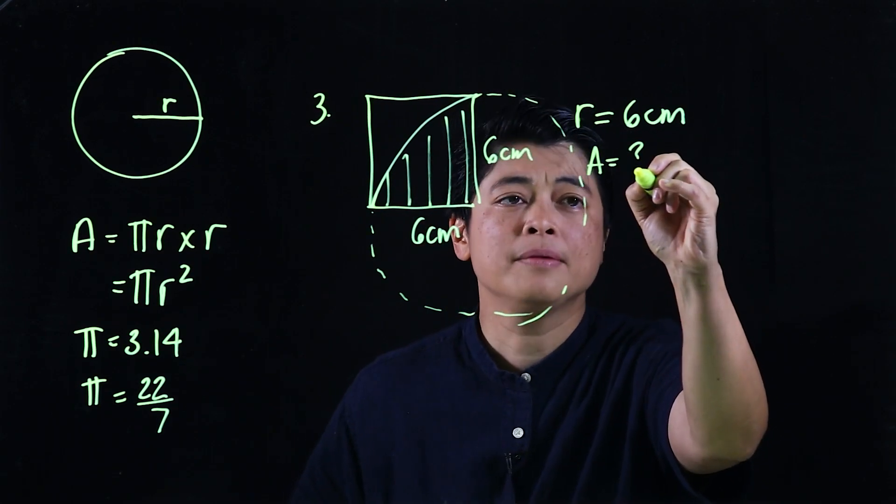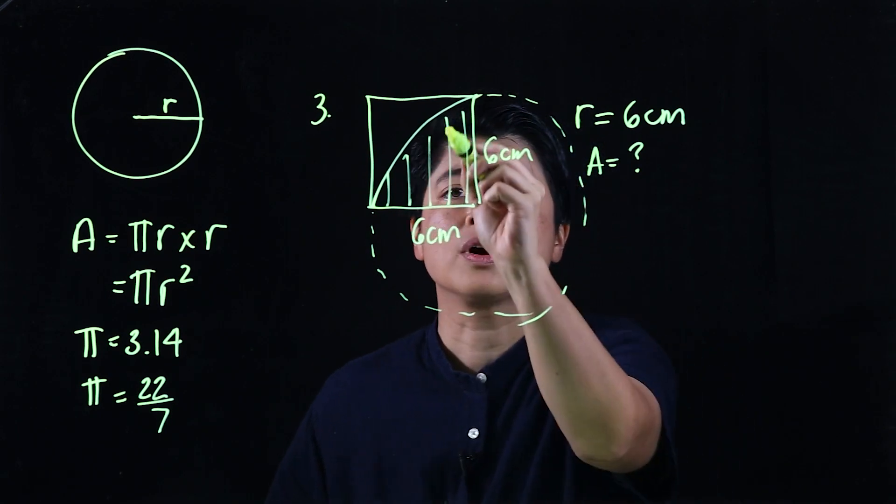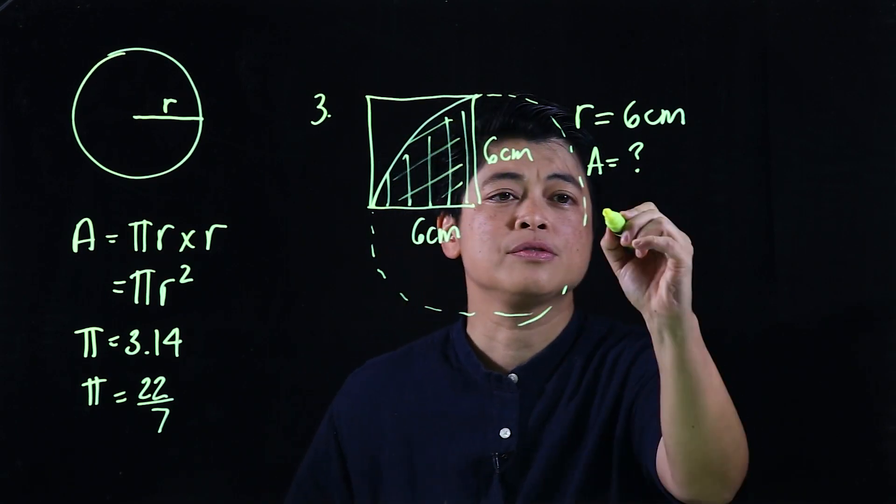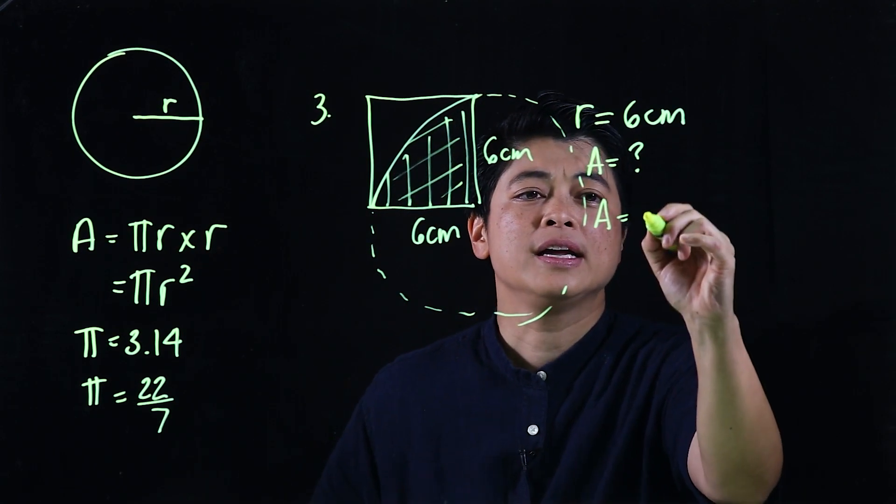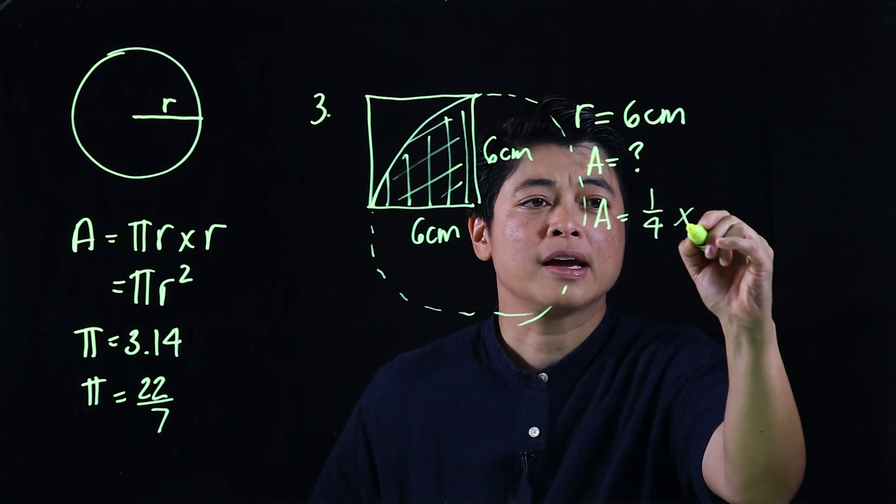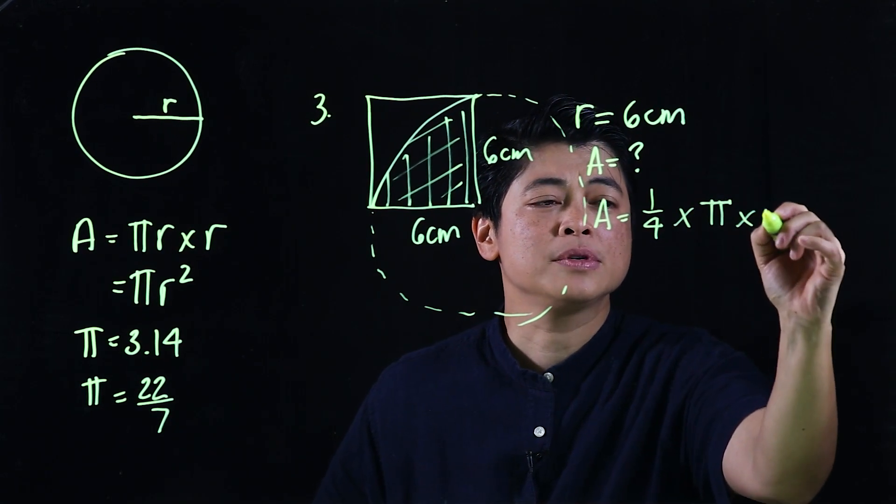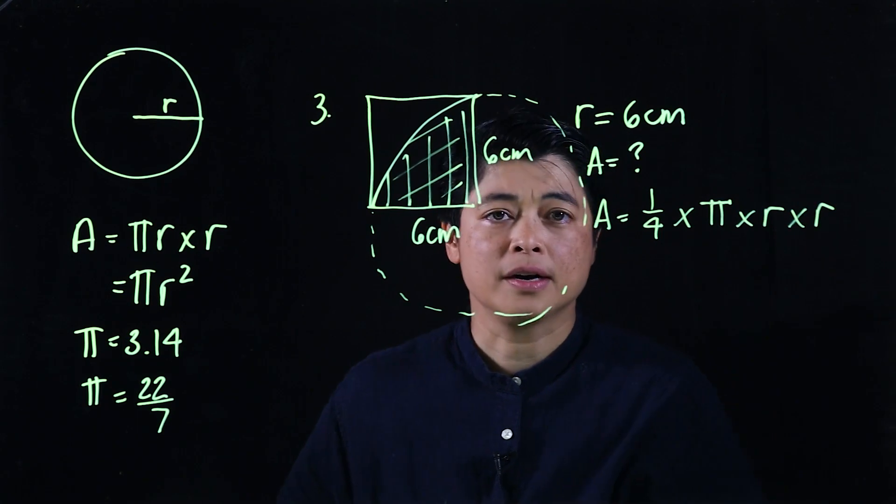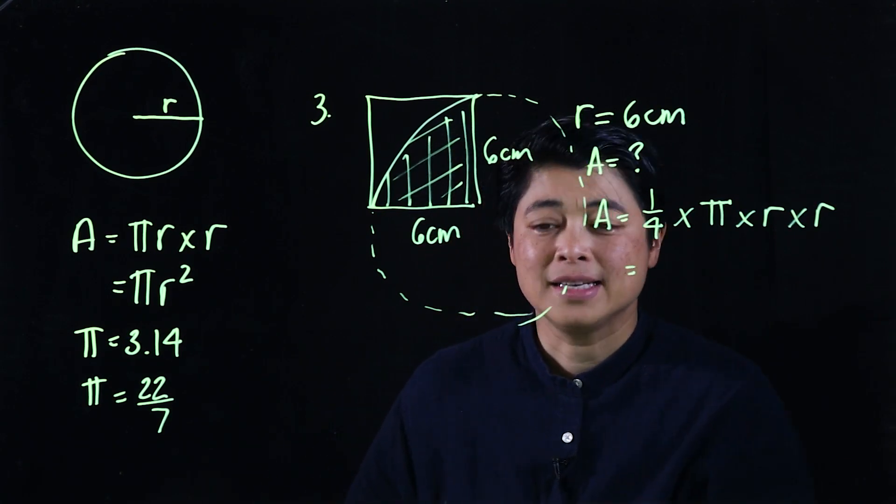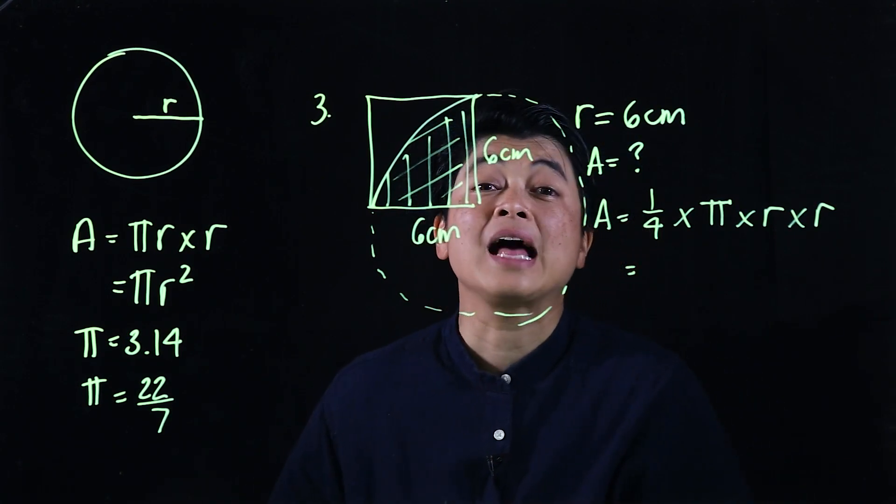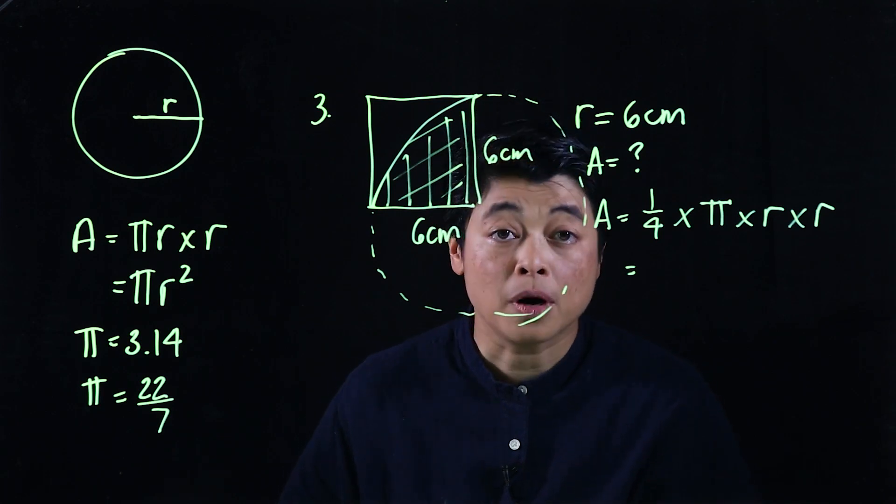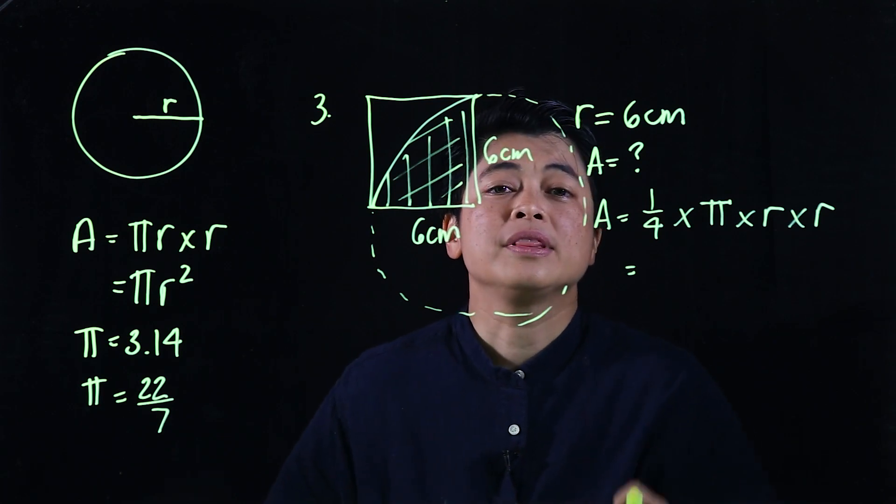And it wants us to look for the area but only of a quarter circle. So which means when we write down the formula it's one fourth times pi times r times r. So again since this is not a calculator problem, what this means is that we want to write it as this, not r squared.